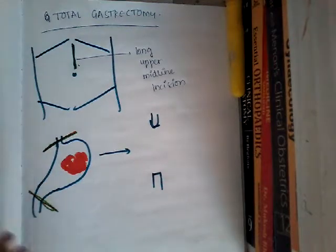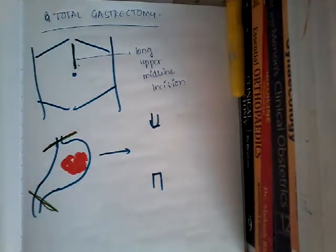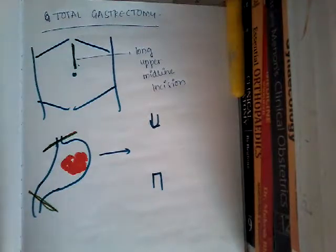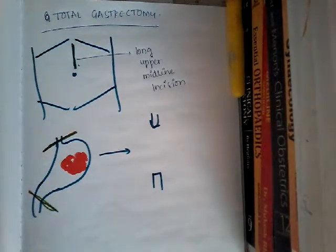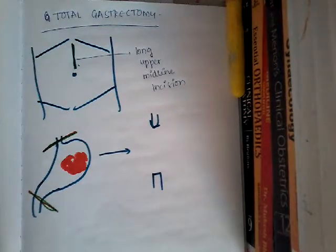You will ligate all the vessels supplying the stomach, like the right gastric artery, left gastric artery, and gastroduodenal arteries — all those will be ligated. Then you will remove the part of the stomach. Along with removing the stomach, you will also remove the omentum and the nodes associated with it. You will also remove the spleen with splenic lymph nodes, and the tail of the pancreas if it is associated. If there is any bit of tumor with any organ, those organs should be removed.